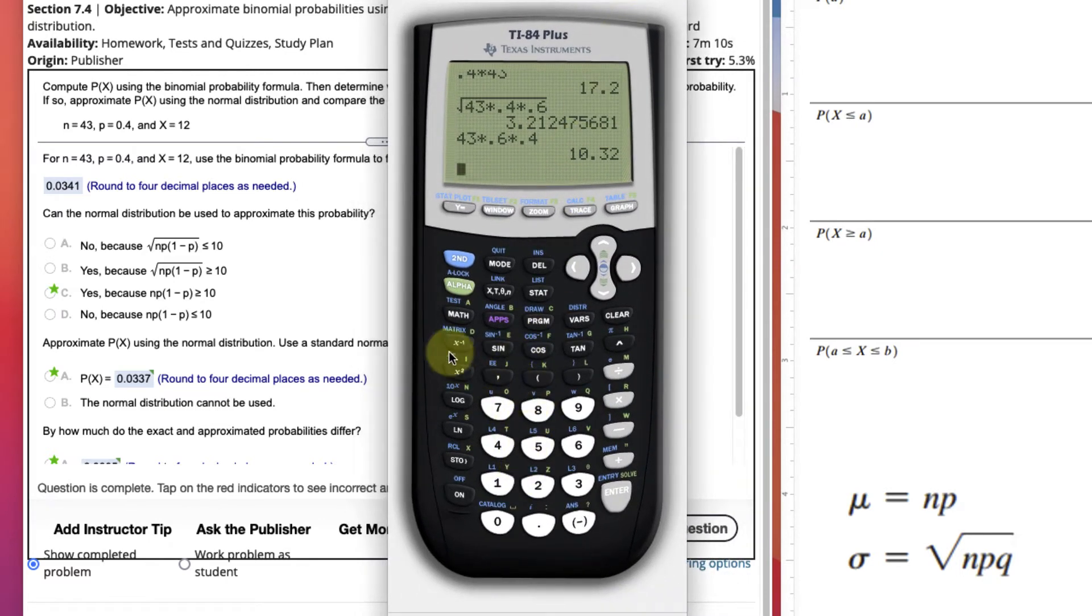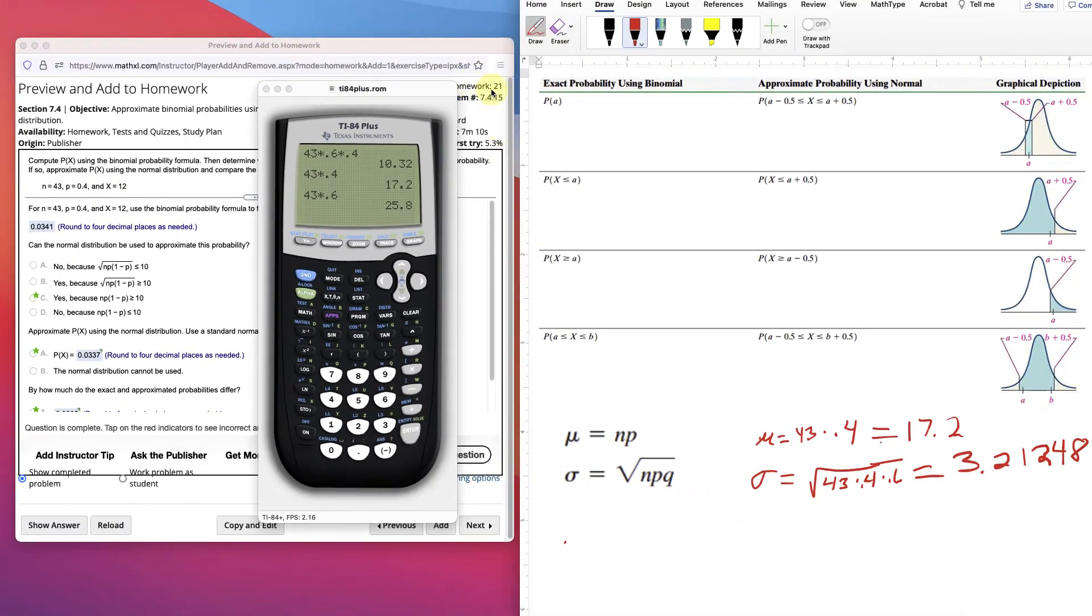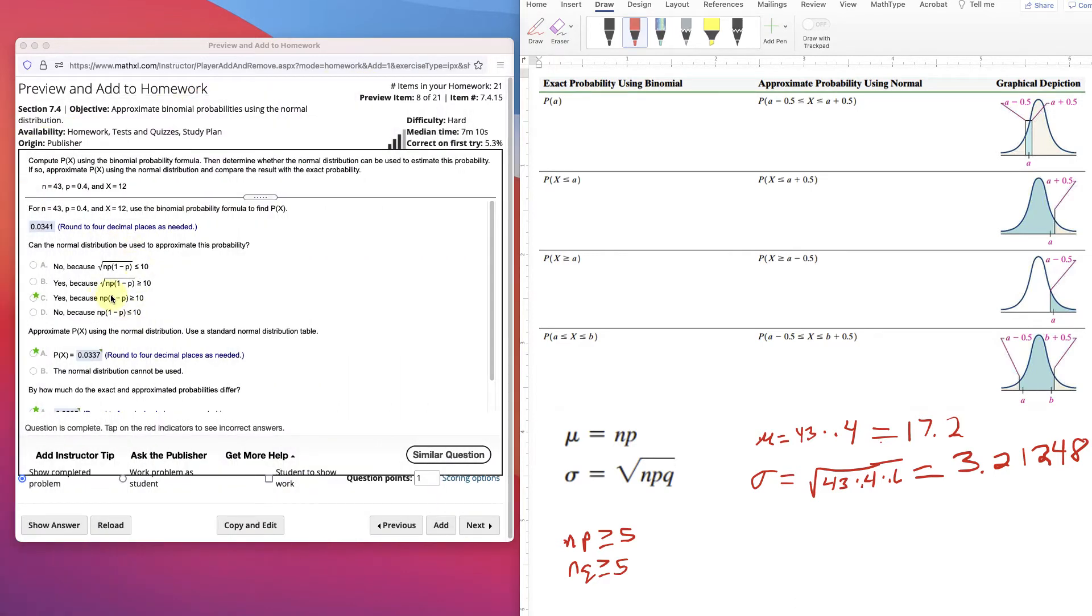In other books, like Triola, it's np is greater than or equal to 5, and 43 times 0.4, and then nq also has to be greater than or equal to 5. You have to have both conditions met, and then it's true. So for Triola, np greater than or equal to 5, and nq also does have to be greater than or equal to 5. And in Sullivan, you have this formula. So it is true, we can use the normal approximation to a binomial.